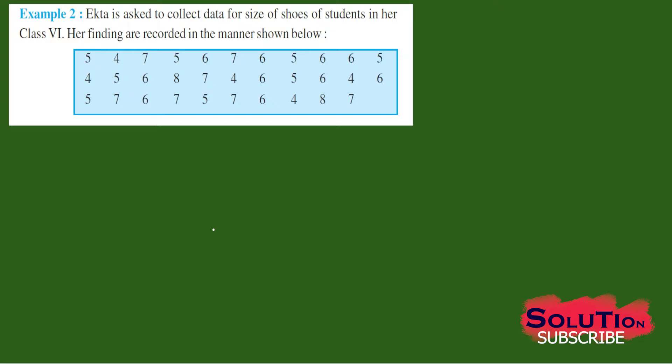Sometimes we need to arrange the data in such a way that we get some information. So in the above example you can see it is written Ekta is asked to collect the data for size of shoes of students in her class 6. Her findings are recorded in the manner shown below, that means Ekta asked all the students one by one their shoe size and then she recorded that particular data in a table.